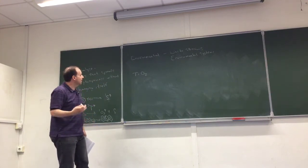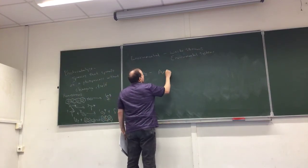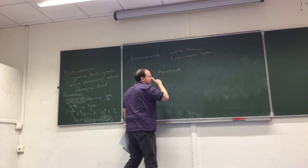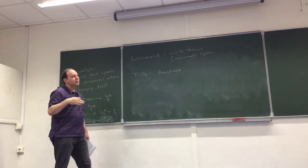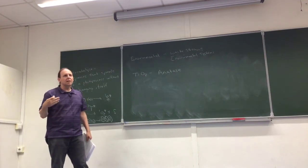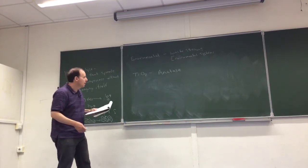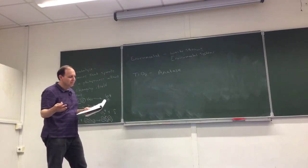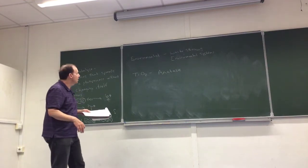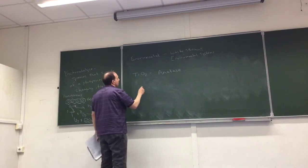Titanium dioxide is the most commonly discussed photocatalyst, and there are good reasons and one bad reason for that. More specifically, the anatase crystal structure of TiO2 is the best at photocatalysis — TiO2 has three crystal structures: anatase, rutile, and brookite. Anatase is a tetragonal structure and is generally considered the best photocatalyst, though there's some debate. The other two structures are typically not as good.